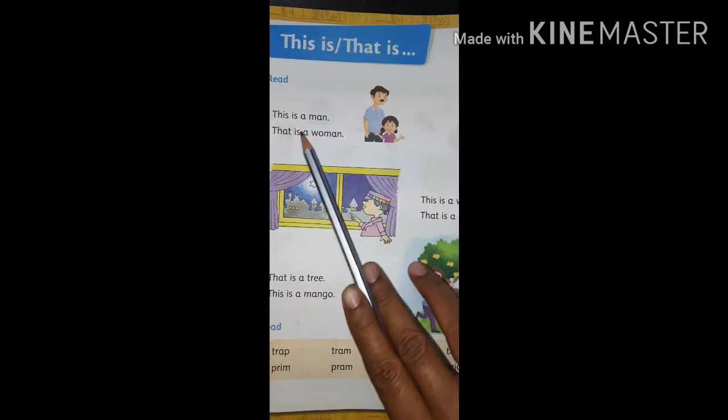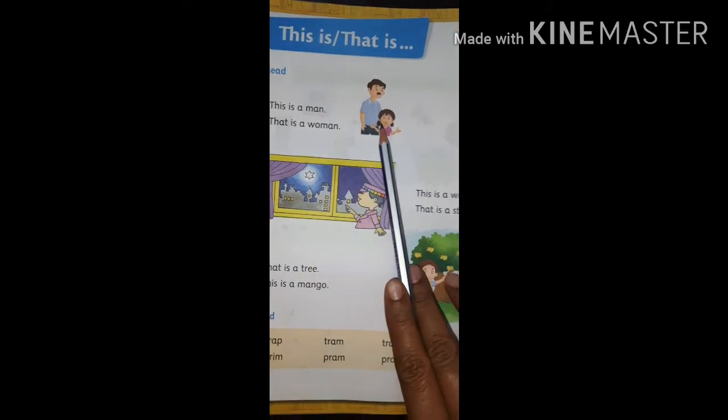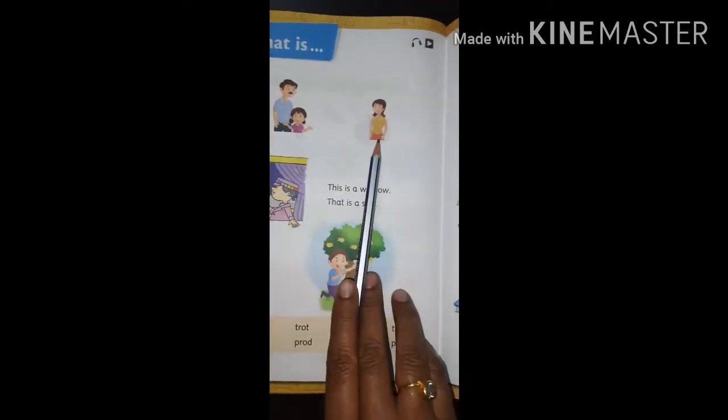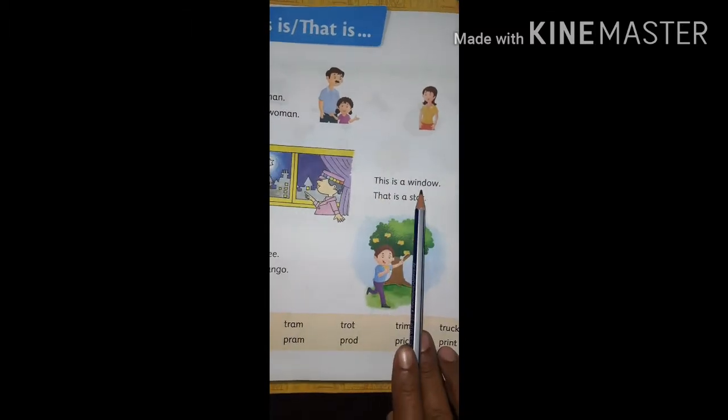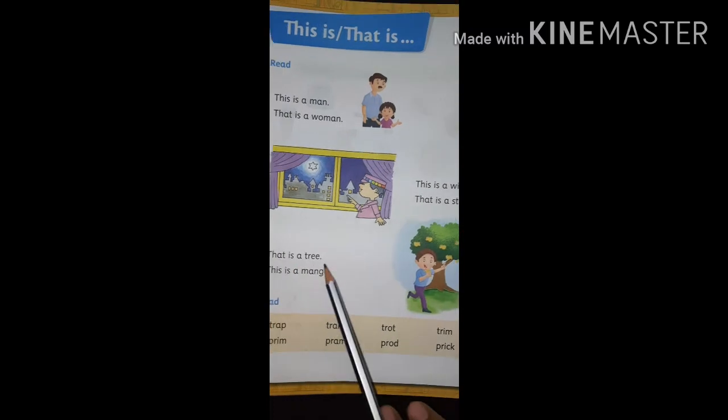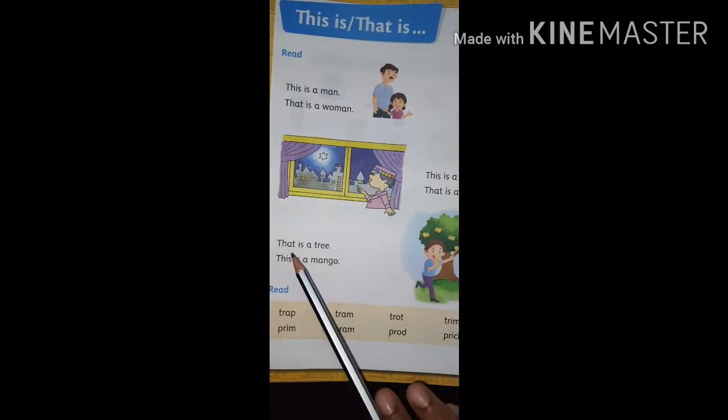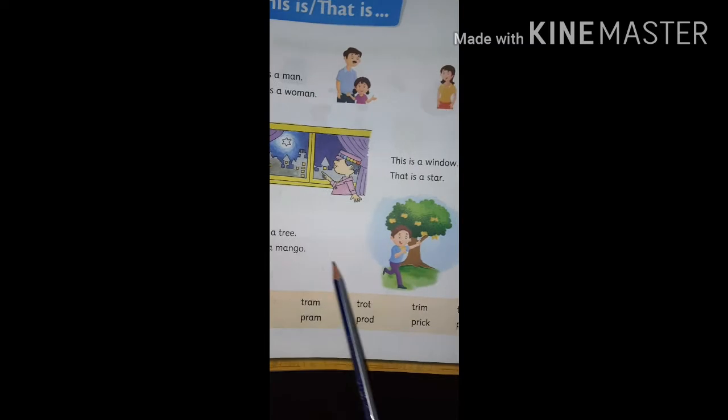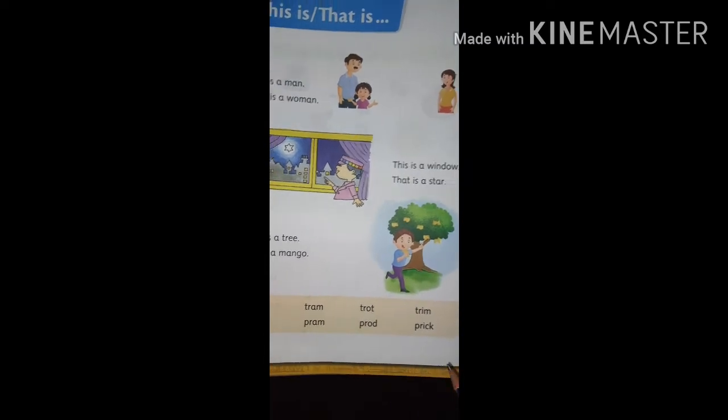Repeat again: this is a man, that is a woman, this is a window, that is a star, that is a tree, this is a mango. Thank you.